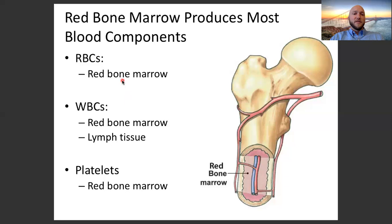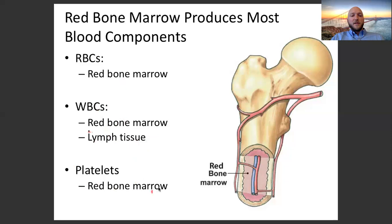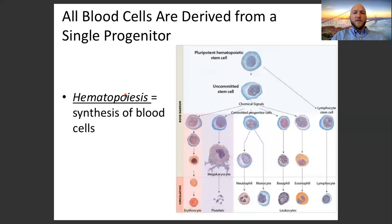Red blood cells, white blood cells, and platelets all come from red bone marrow. White blood cells also come from red bone marrow, and a few of them — the agranulocytes — can also come from lymphatic tissue. We'll get into those when we talk specifically about white blood cells, so that'll make more sense later on. Platelets also come from red bone marrow.